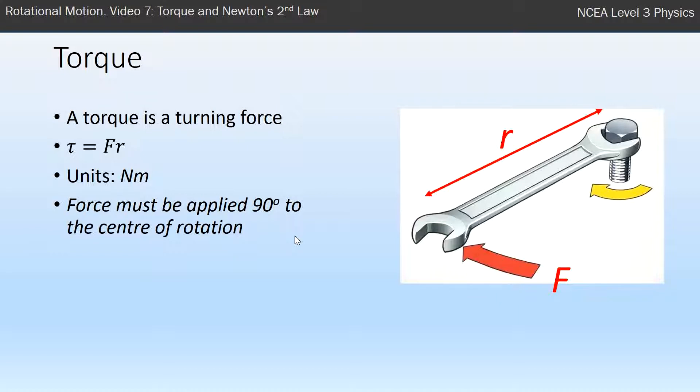If you think about this spanner here, and you push along the spanner back towards the bolt, it's not going to rotate. Whereas if you push 90 degrees to the spanner, it will rotate. If that's the case, then you can use the formula τ = Fr.